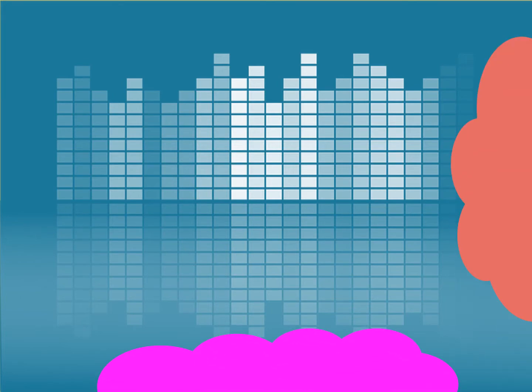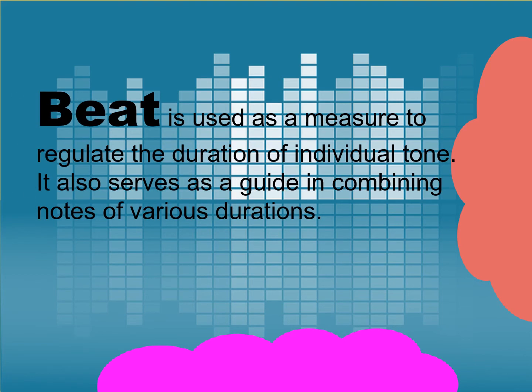We mentioned beat earlier in the definition of rhythm, so what is beat? Beat is used as a measure to regulate the duration of individual tones. It also serves as a guide in combining notes of various durations.